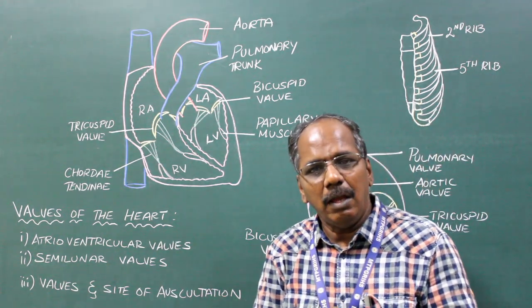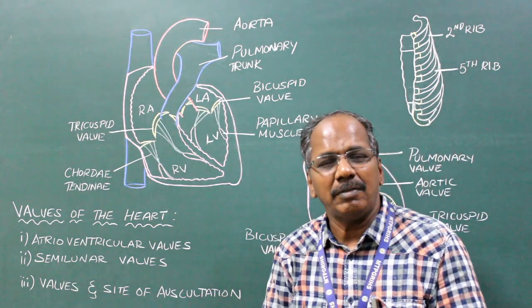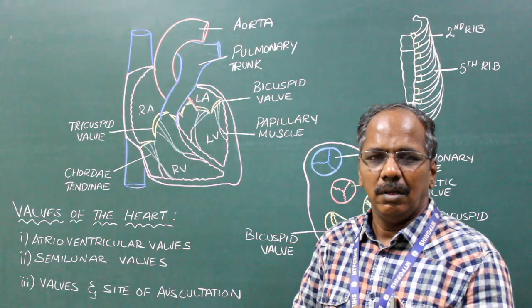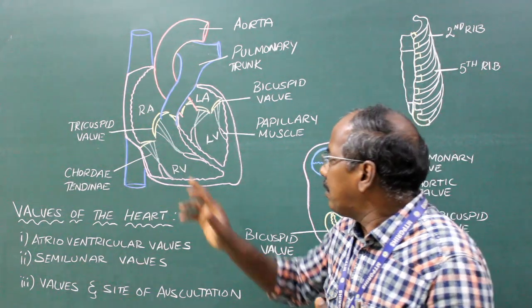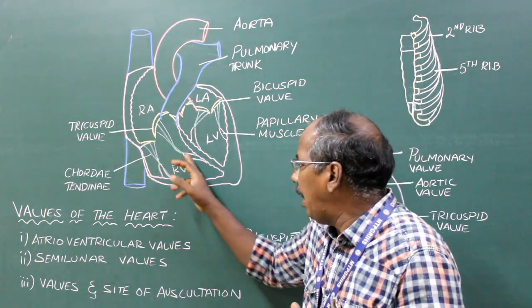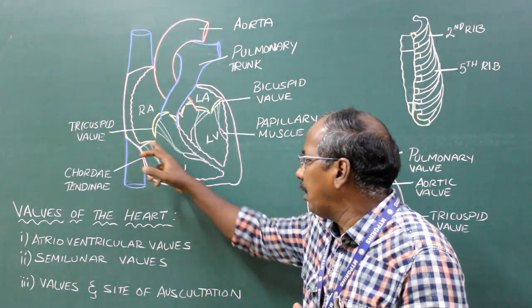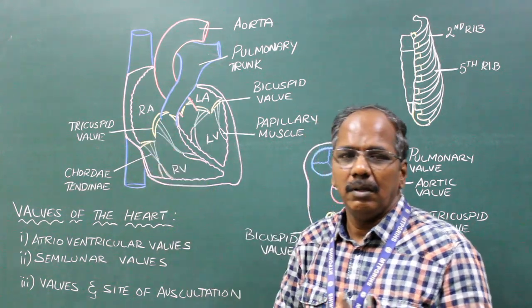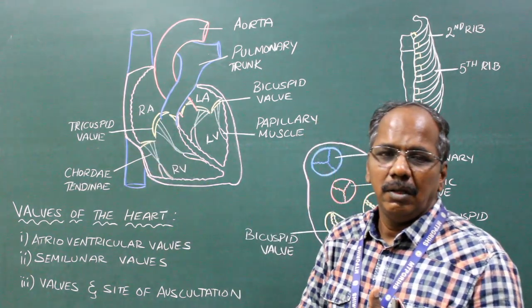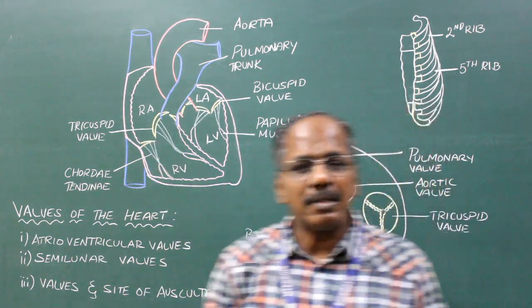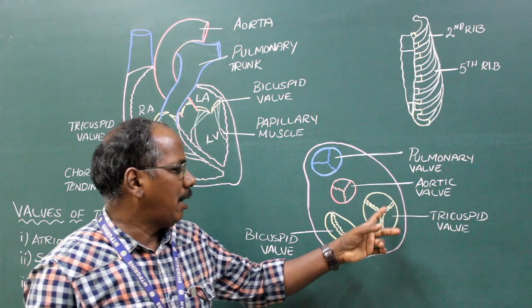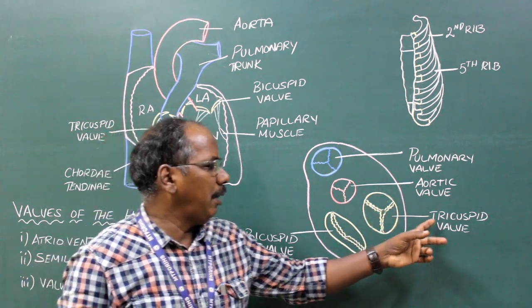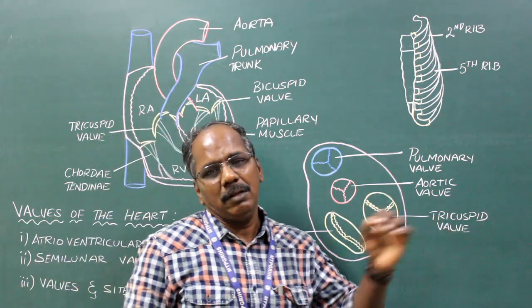Right atrioventricular valve. It is present between the right atrium and right ventricle. It consists of three cusps, hence the name tricuspid.